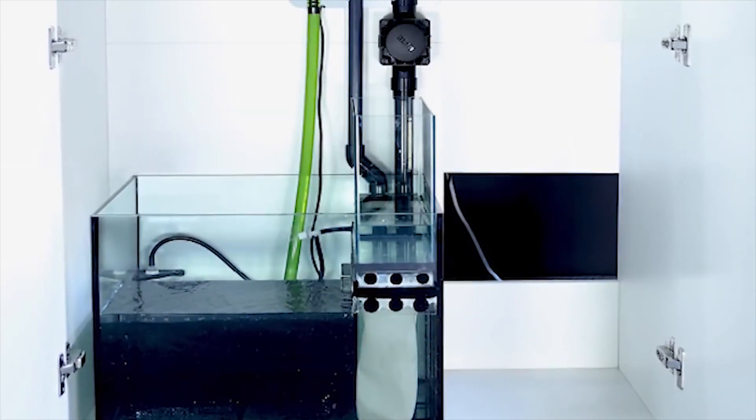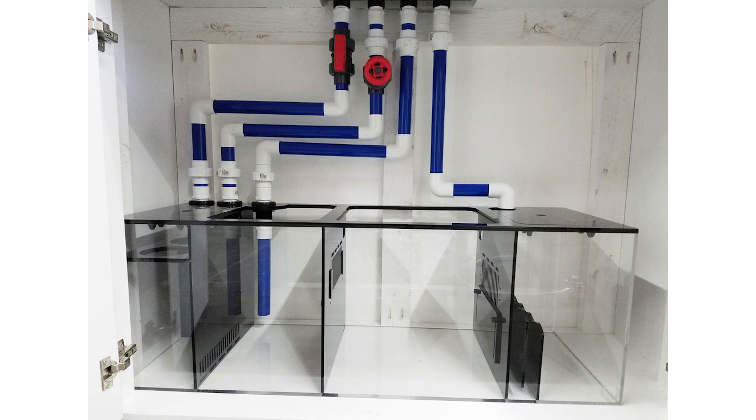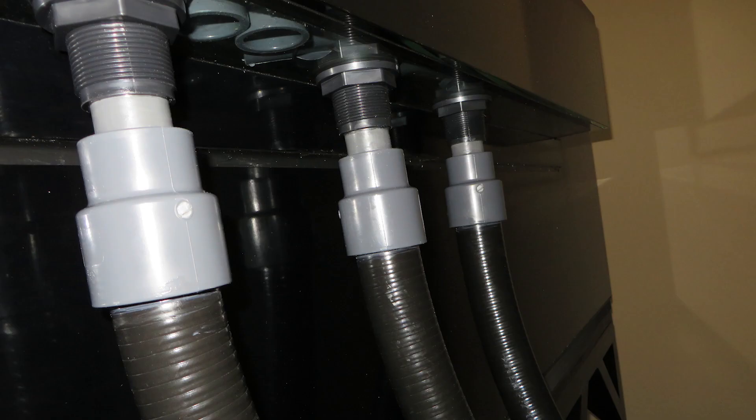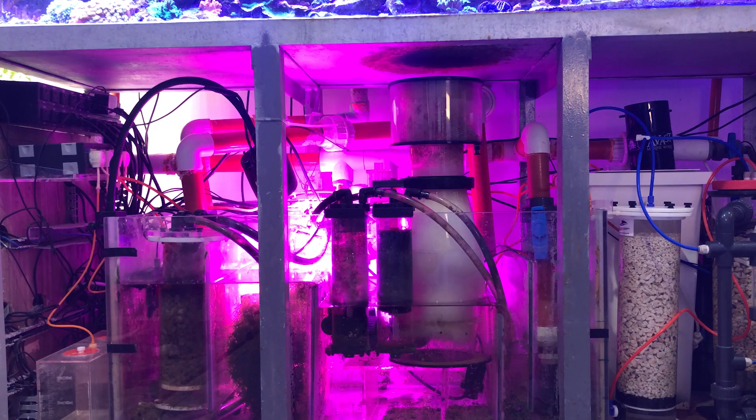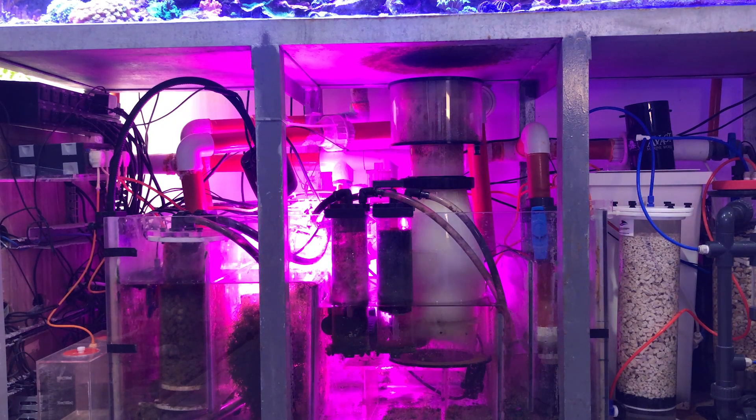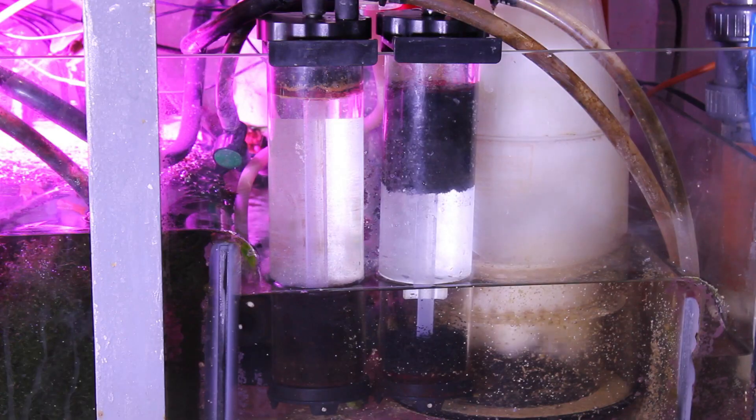Ready-made tanks come with all needed plumbing. You can use hard PVC plumbing or flexible tubing for plumbing the tank. In my tank, I use all hard PVC except for media reactors, I use flexible tubing.